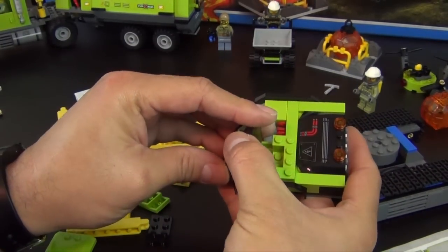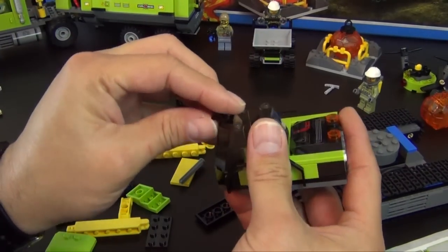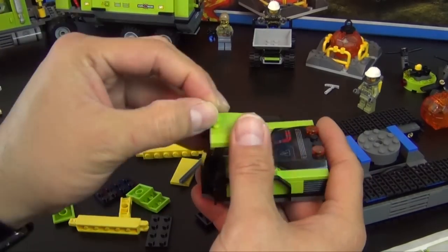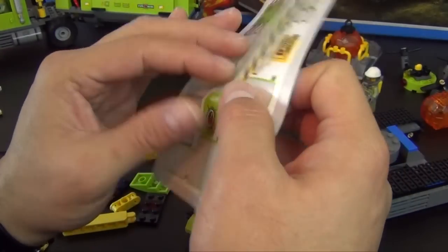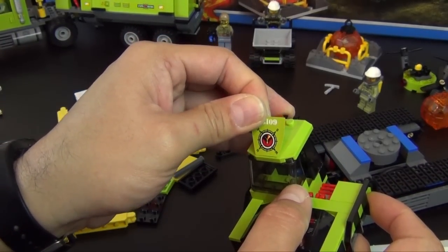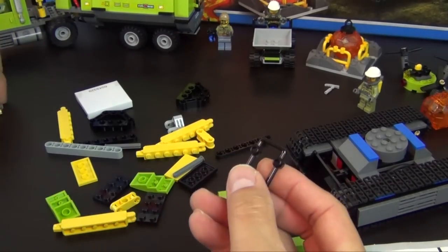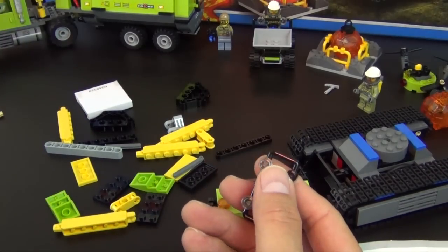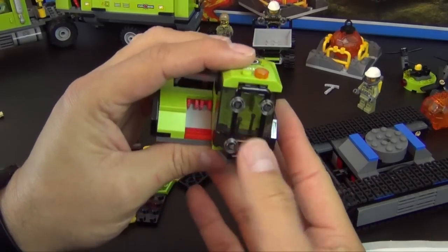Okay, we have some windscreens. The driver's cabin roof, another light. Another sticker. Getting close to using all of our stickers. It was a very large sticker sheet that came with this set, so it's taken a while to use them all.